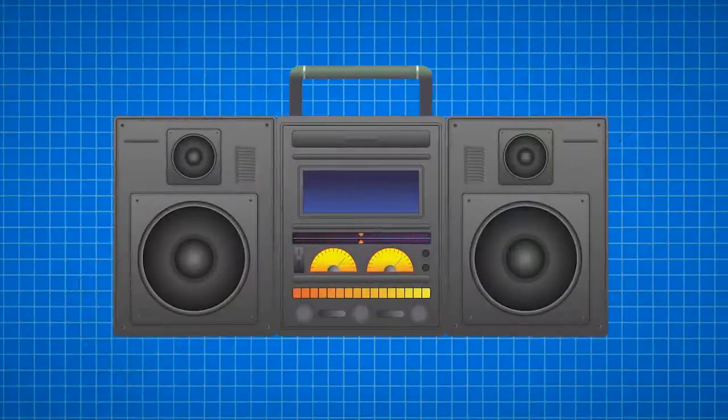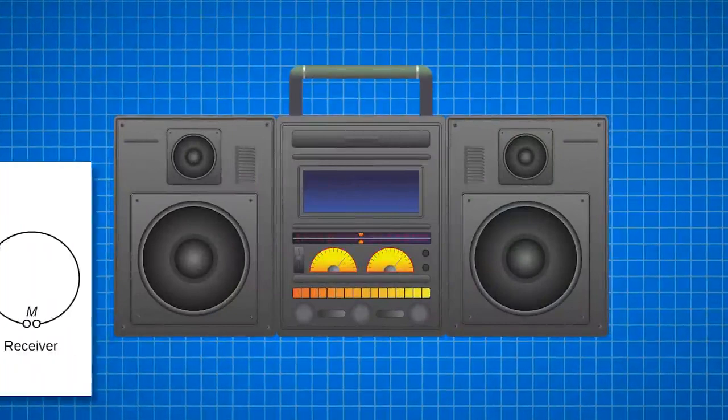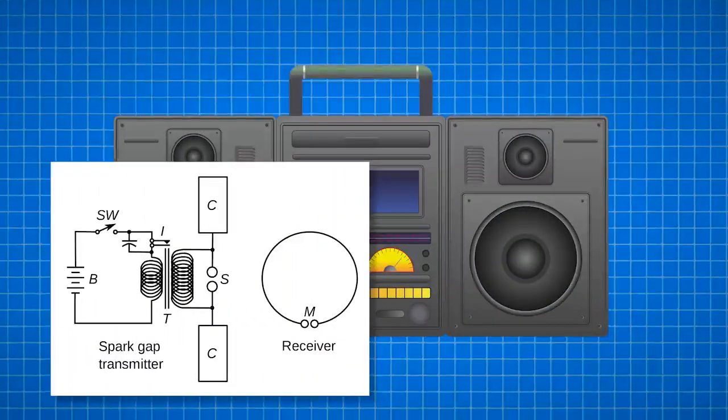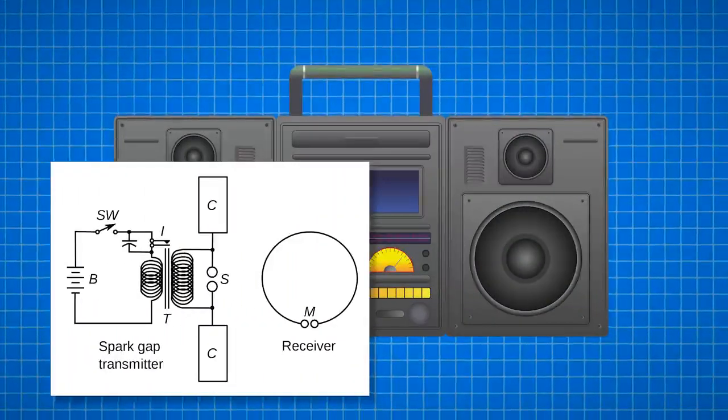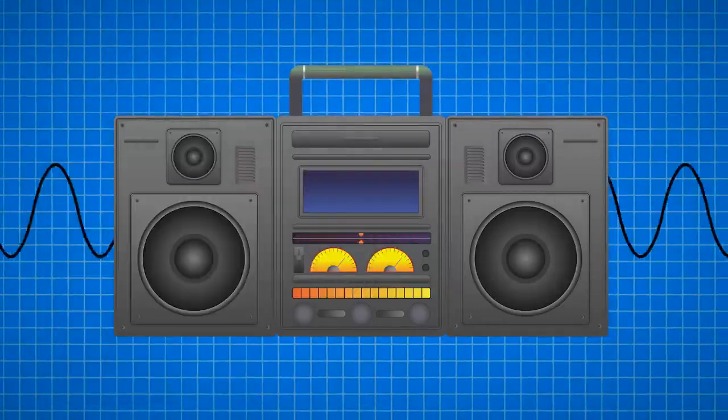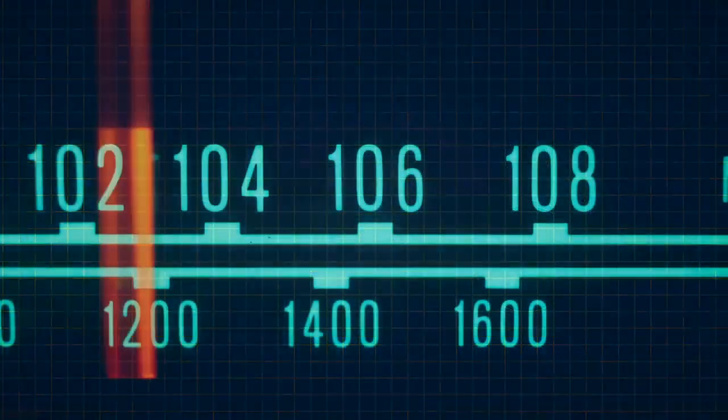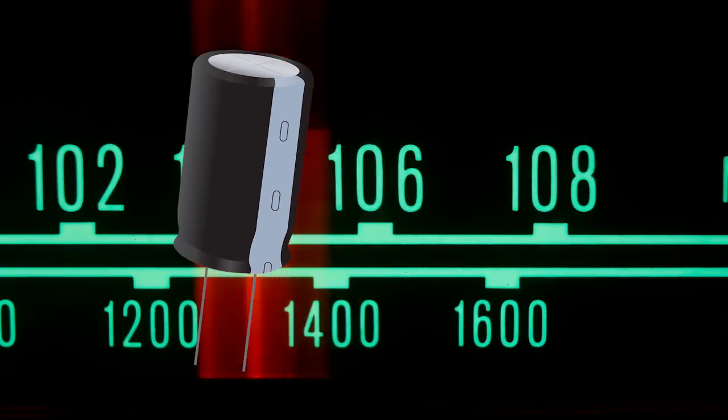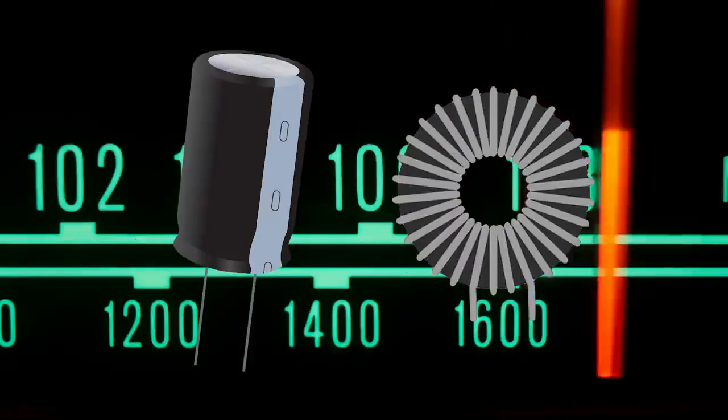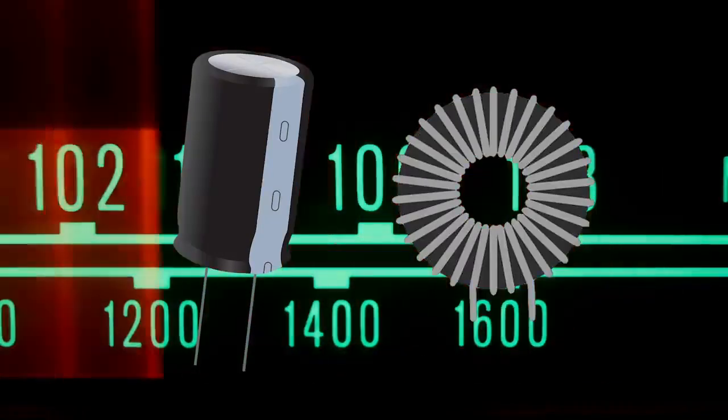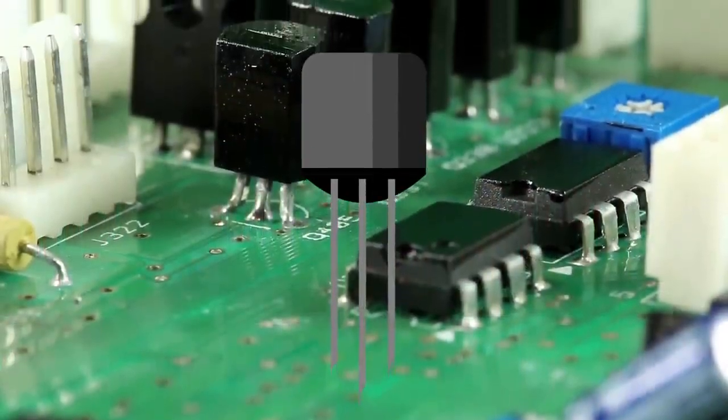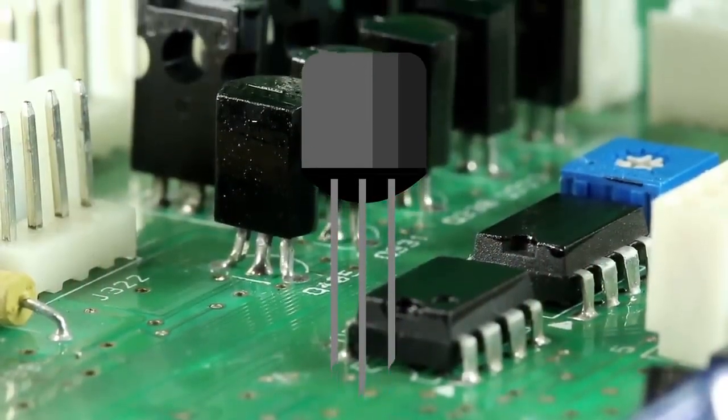Modern radios build off of this idea by creating rapidly changing electric currents on the transmitter side. One of the best ways of doing this is by utilizing sine waves, as we discussed. To create a sine wave, radios use capacitors and inductors to vary the current and voltage in a controlled means. Transistors are used to amplify the signal so that it has a further range.